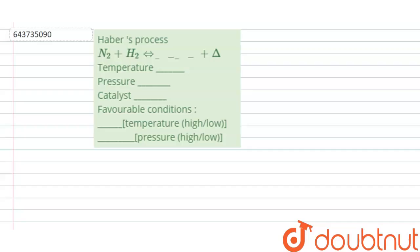The question given here is Haber's process: N2 plus H2 gives dash plus heat. We have to find out temperature, pressure, catalyst used, and favorable conditions. So temperature, what should it be, high or low? And pressure, high or low?